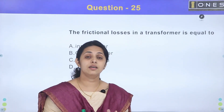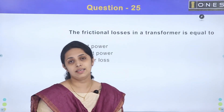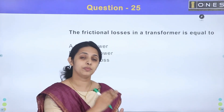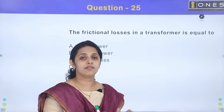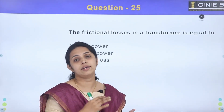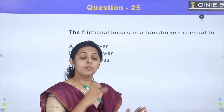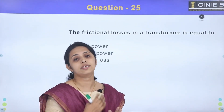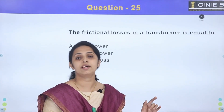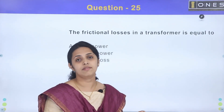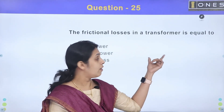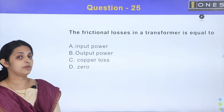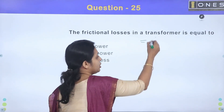A transformer is a static device — it is not a rotating device. It has two windings: primary winding and secondary winding, with a common core. Power is transferred via the mutual induction principle. Since there is no rotating part, there is no friction, so the friction loss is equal to 0.